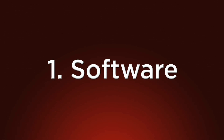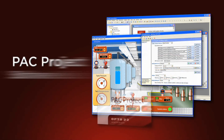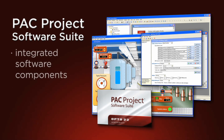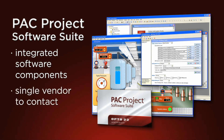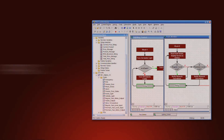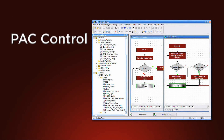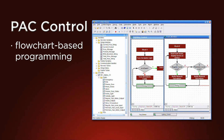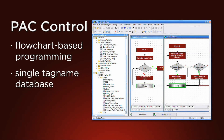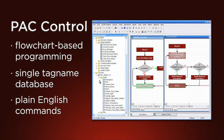Let's start at the top with software. PAC Project is our software suite designed specifically for our SNAP PAC system hardware. This means you know the software and hardware will work together and you have only one vendor to call if you have a question. The centerpiece of PAC Project is PAC Control — it's an easy-to-use, flowchart-based control programming language. We made it even easier by basing the software on a single tag-name database and using a plain English command set.